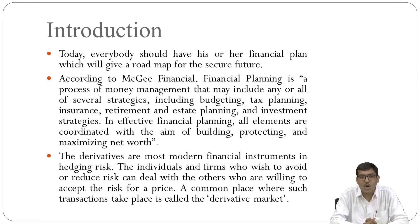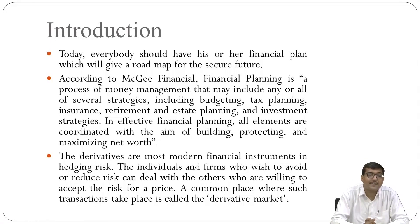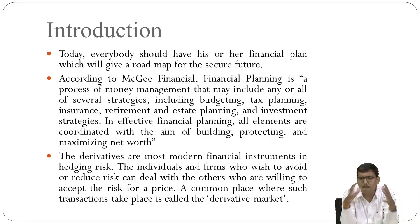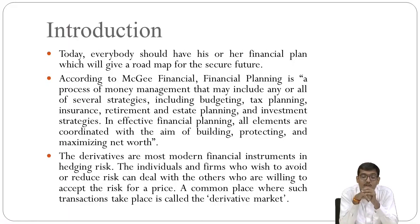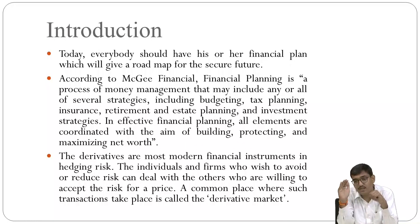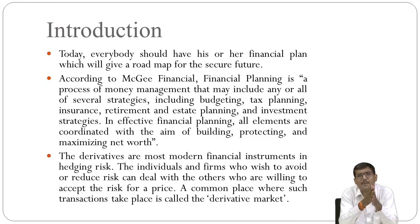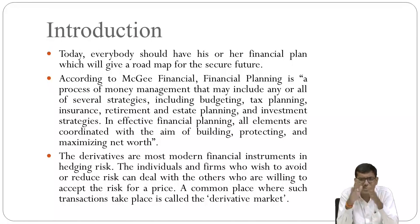In effective financial planning, all elements are coordinated with the aim of budgeting, protecting, and maximizing the net worth. To take a simple example: if you want to purchase a car after 5 years or 2 years, you have to make savings with respect to that particular year. Ultimately, financial planning gives a roadmap for securing a future across different aspects — budgeting, protecting, and maximizing net worth.